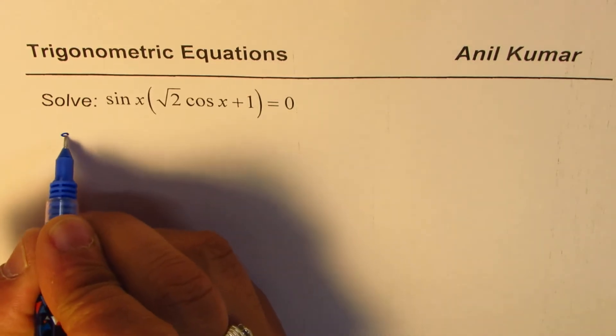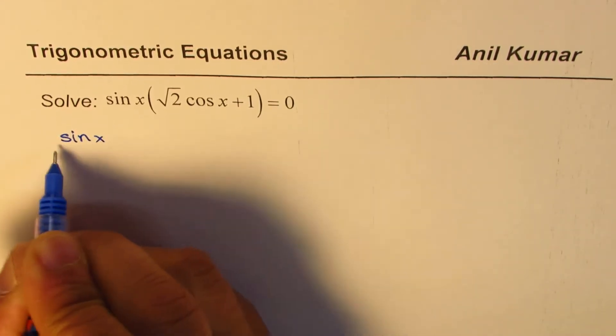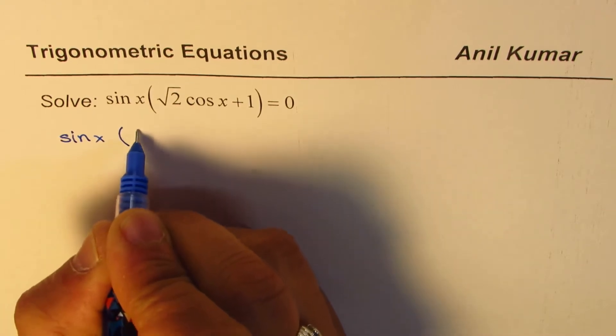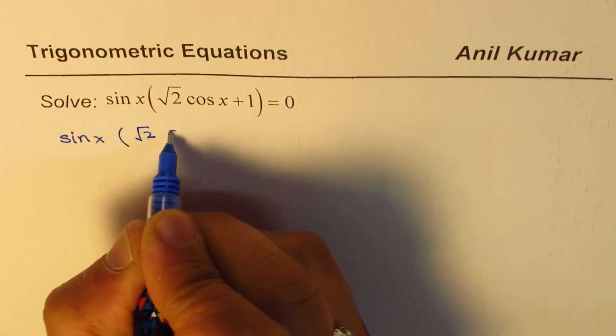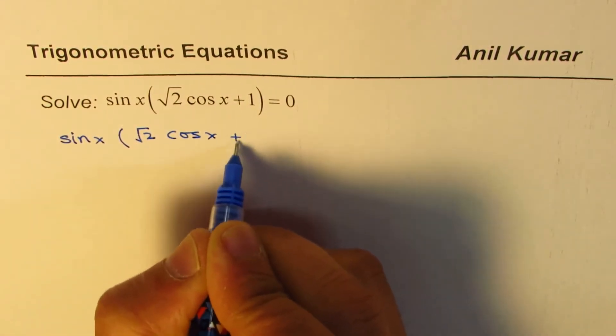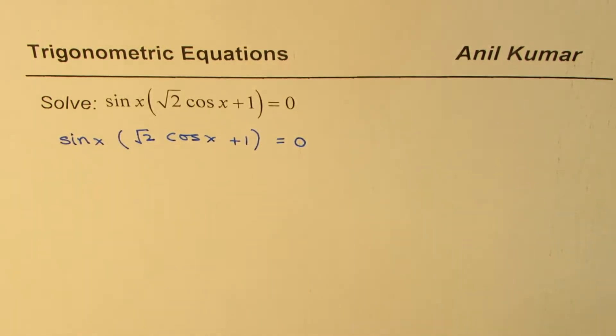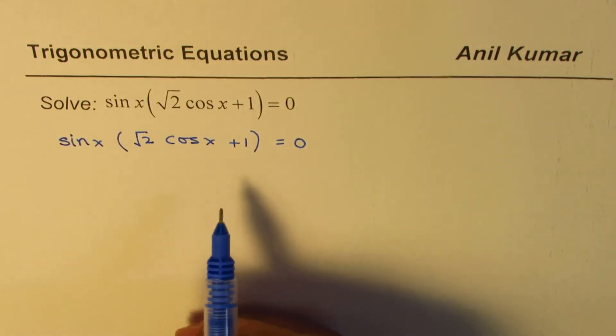Let me rewrite this equation. It is sin x, this is one of the factors, the other factor is square root 2 cos x plus 1 equal to 0. Now this equation could have many solutions.